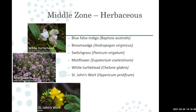For herbaceous plants in the middle zone, white turtlehead and St. John's wort really like moister soil. Mistflower can be a little aggressive at times — one way to keep aggressive plants in check is to cut off the seed heads once they're done flowering. You can keep some seed to put back under the plant, but that helps control where it reseeds rather than letting it spread every direction.